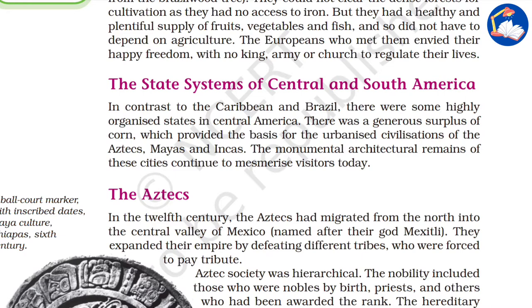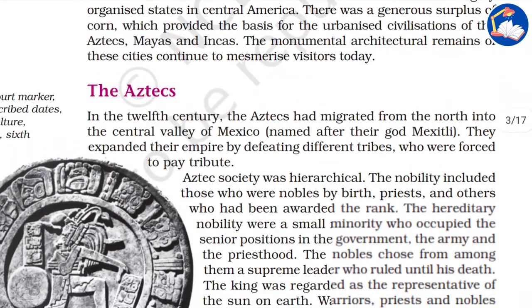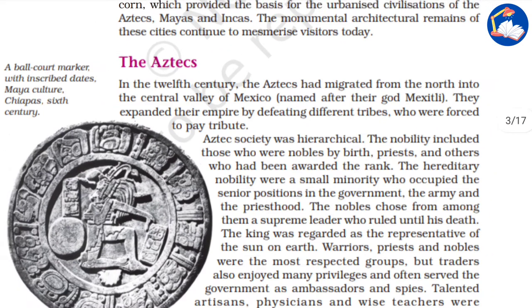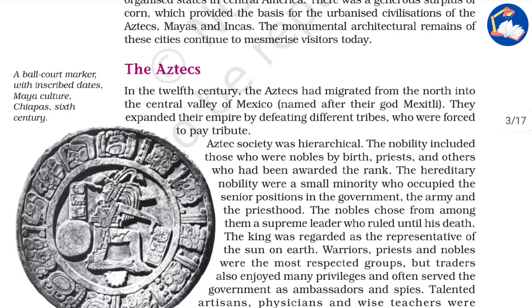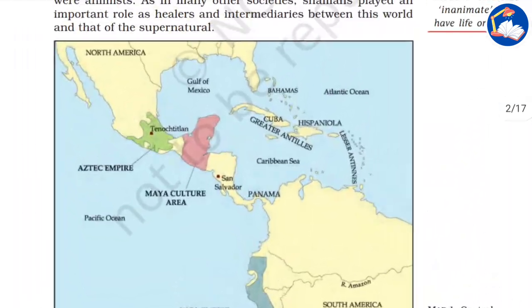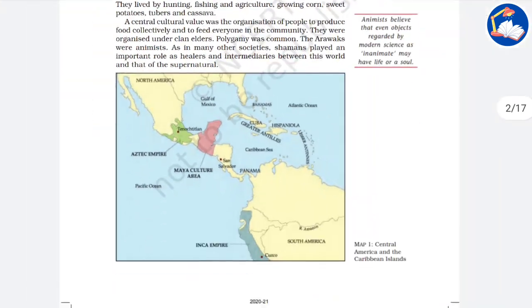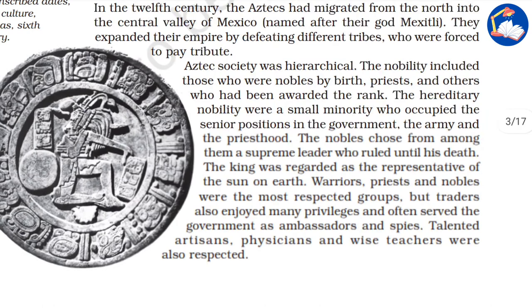The Aztecs migrated from the north into the central valley of Mexico and expanded their empire by defeating different tribes, who were then forced to pay tributes. This is the Aztec Empire area on the map.